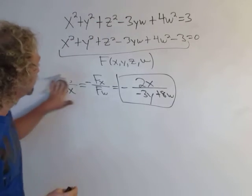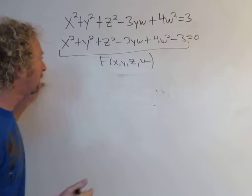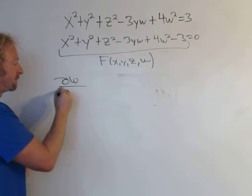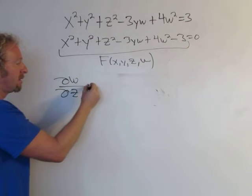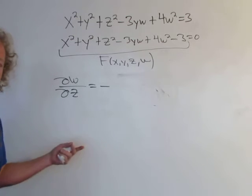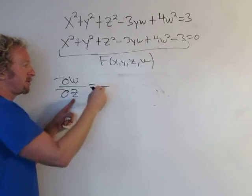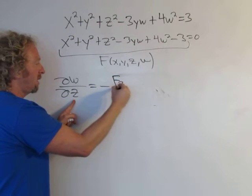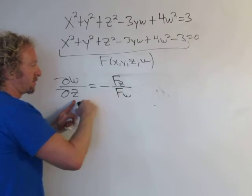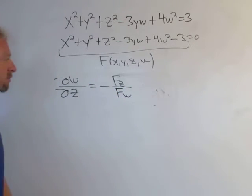Let me do one more — let's do del w / del z. In this case we have the minus sign, and if you use the trick we talked about before, you just crisscross them: F sub z on top and F sub w on the bottom. Just crisscross them — always works. Super cool.